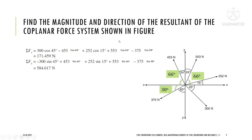Second example: find the magnitude and direction of the resultant of the coplanar force system shown. There are five forces. First, convert all angles to be with respect to the horizontal axis. The 553 N force is given as 24° with the vertical, so 90 − 24 = 66°. The 252 N force is already with respect to horizontal. The 375 N force: 90 − 60 = 30°. Now all angles are with respect to horizontal.